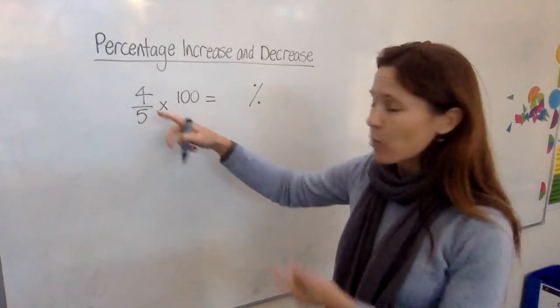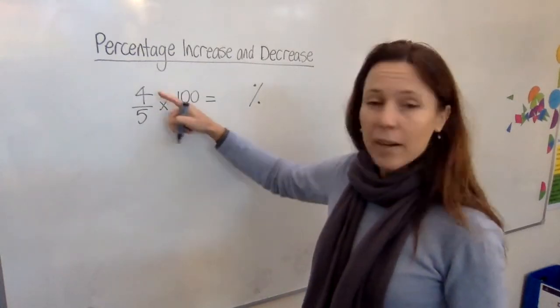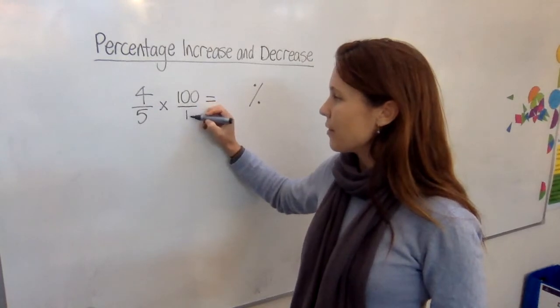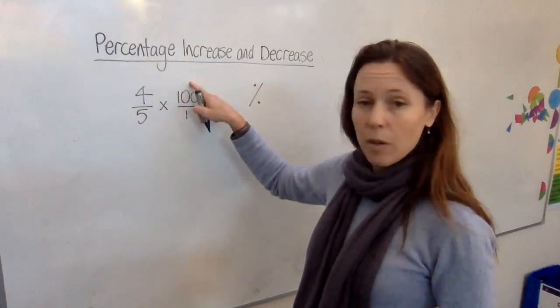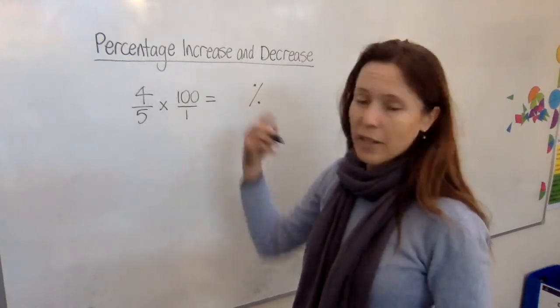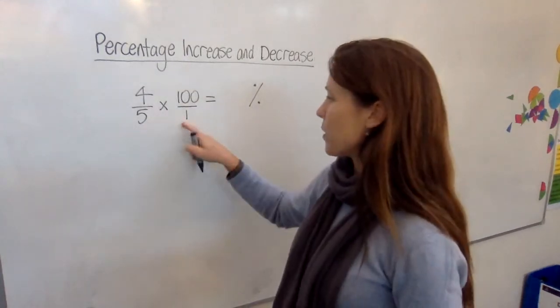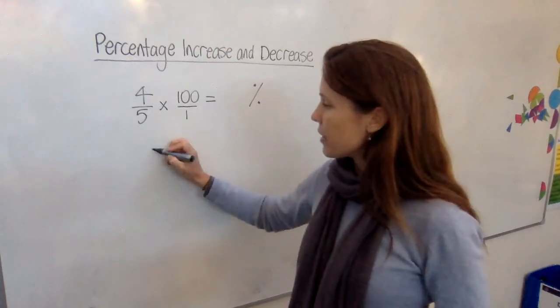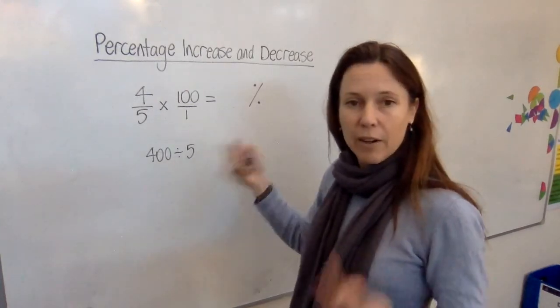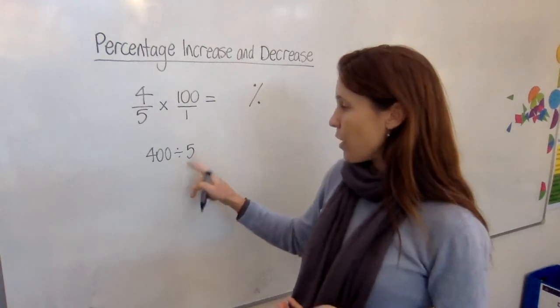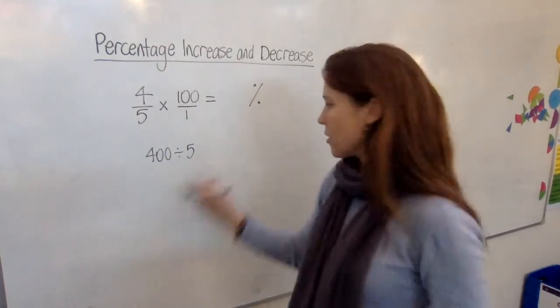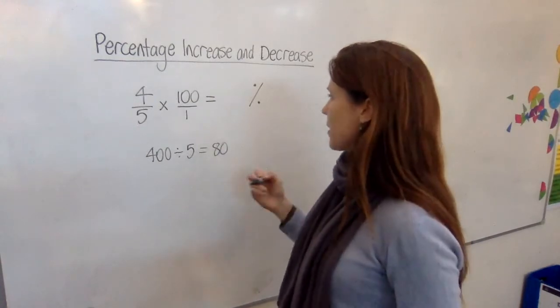Now, easy way to do this with any numbers, we know how to multiply fractions already. This is basically 100 over 1, isn't it? So you do top times top to make top, bottom times bottom to make bottom. So 4 times 100 is 400, 5 times 1 is 5. So all I really need to do here is work out what is 400 divided by 5. Now I know my 5 times tables, 5 8s are 40, so 5 80s will be 400. So that gives me 80 there.